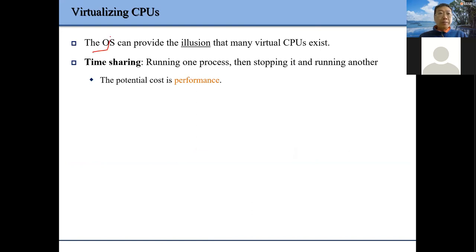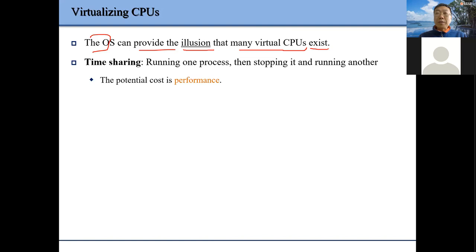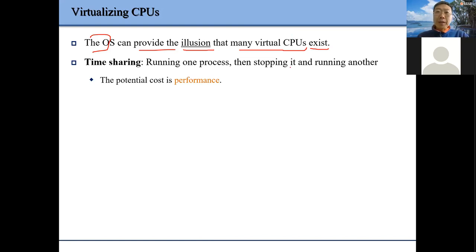First, the operating system provides the illusion that many virtual CPUs exist. From the user perspective, we have no idea whether a running program is actually running or waiting — our illusion is that our program is running right now.